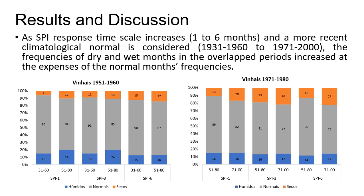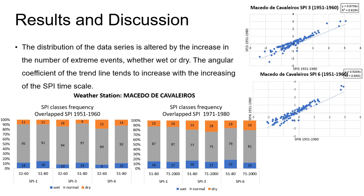As the SPI response time scale increases from 1 to 6 months and a more recent climatological normal is considered, the frequencies of dry and wet months in the overlapped periods increased at the expense of normal month frequencies. As we increase the time scale of SPI, the frequency of normal months decreases and the number of months of extreme classes increases. The distribution of the data series is altered by the increase in the number of extreme events, whether wet or dry.